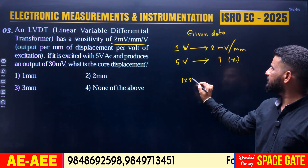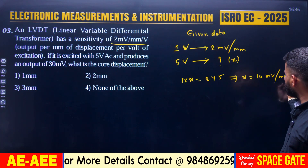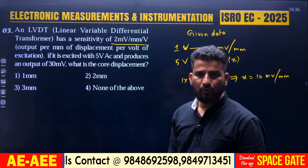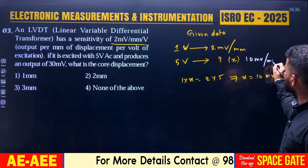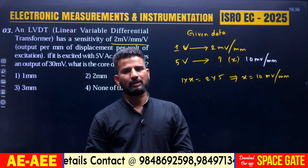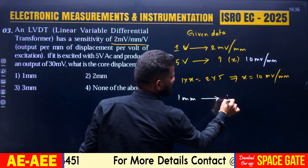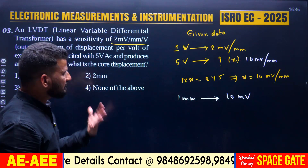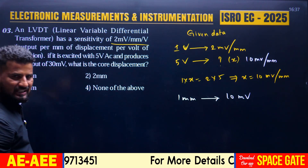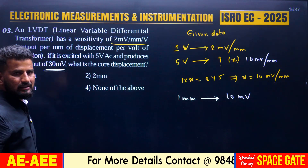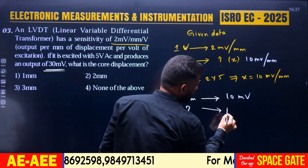Cross multiplying: 1 × x = 2 × 5, therefore x = 10 millivolt per mm. So with 5V excitation, the sensitivity of the LVDT becomes 10 mV/mm. Now the question further states that the LVDT produces an output of 30 mV. What is the displacement?